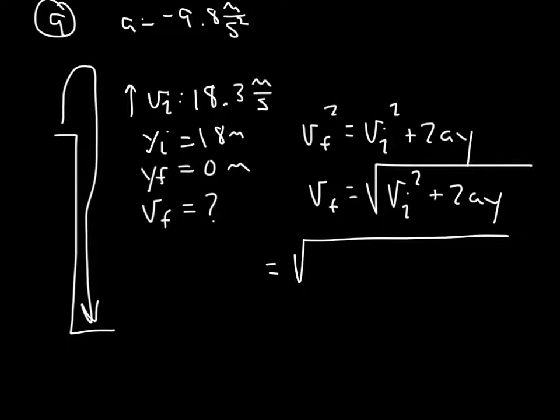I need to move it over a little bit to make sure I can get all my numbers in here. Now it's 18.3 meters per second. The whole thing squared. So I use my parentheses. Plus 2 times negative 9.8 meters per second squared.